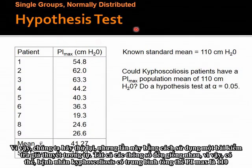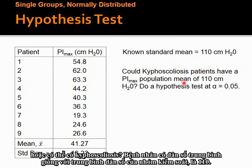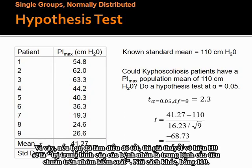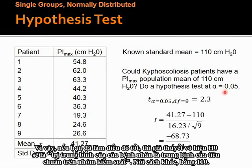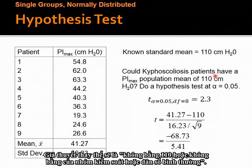Let's try again using a hypothesis test with the same parameters. Could kyphoscoliosis patients have a PI max population mean of 110? The null hypothesis H0 is that the mu of kyphoscoliosis patients equals 110. Since we're doing a two-tailed test by default, the alternative hypothesis is that mu is not equal to 110. Alpha value is 0.05, so we find T-alpha: at alpha 0.05 and degrees of freedom 8, that should be about 2.3.